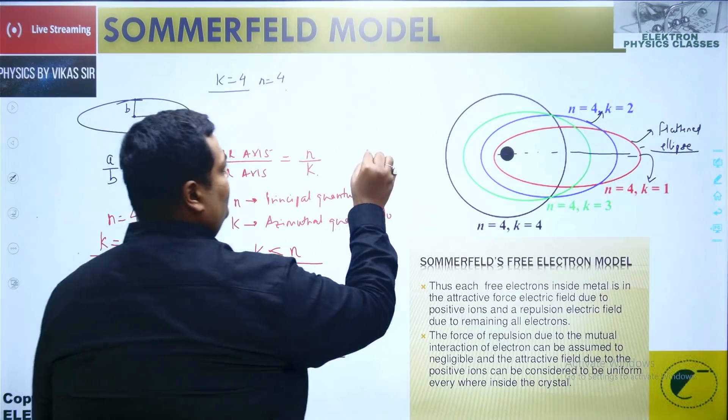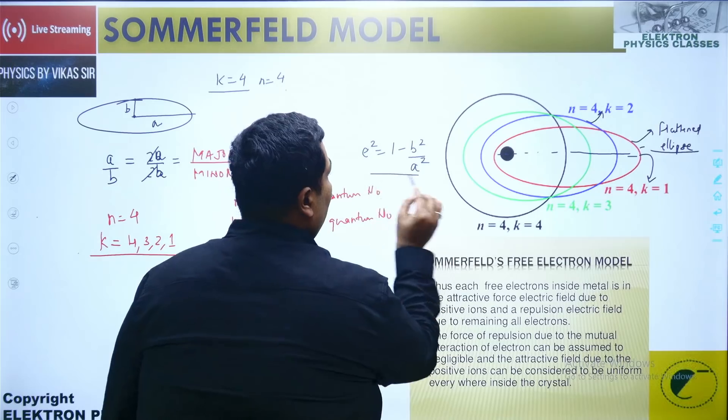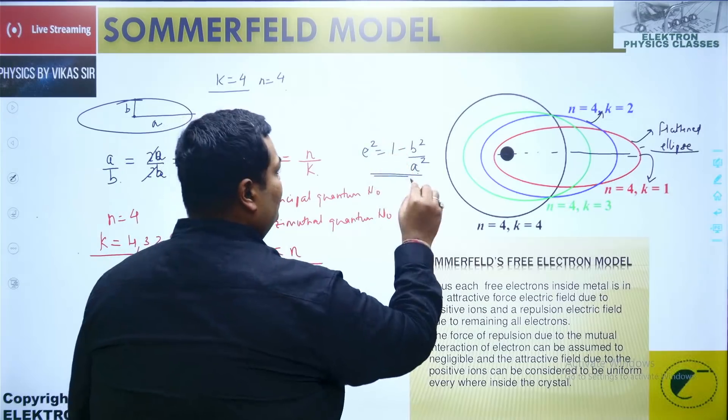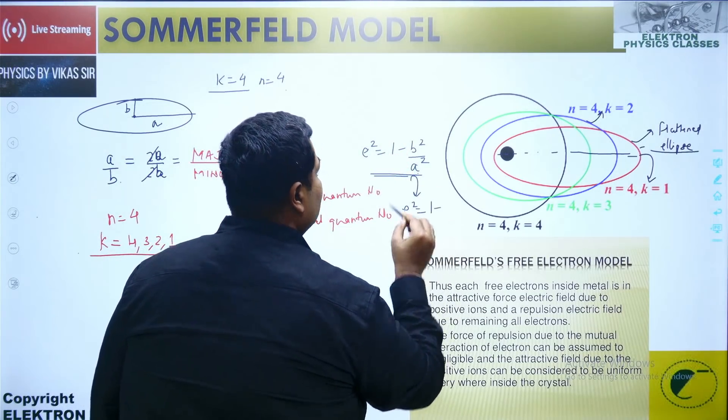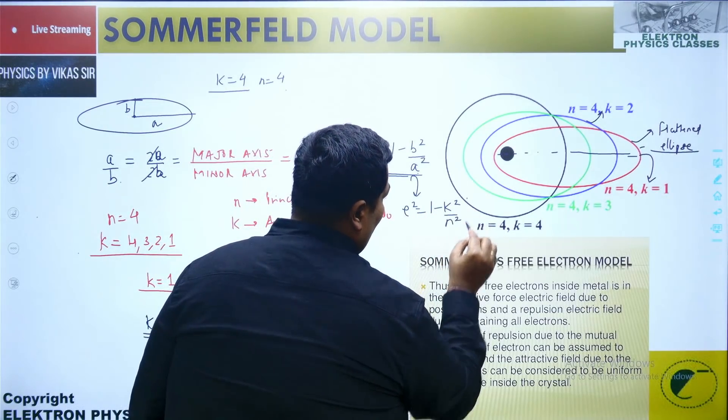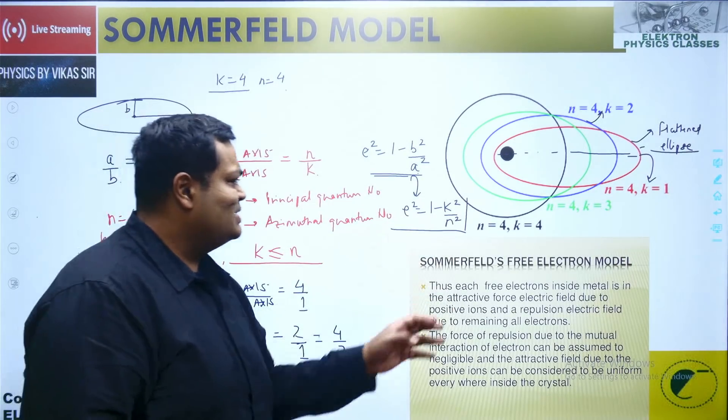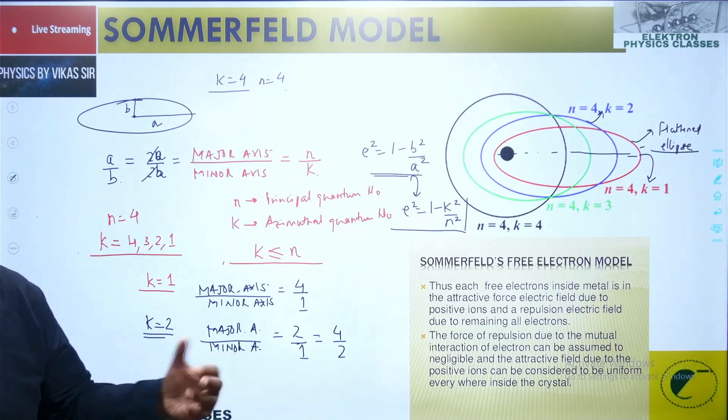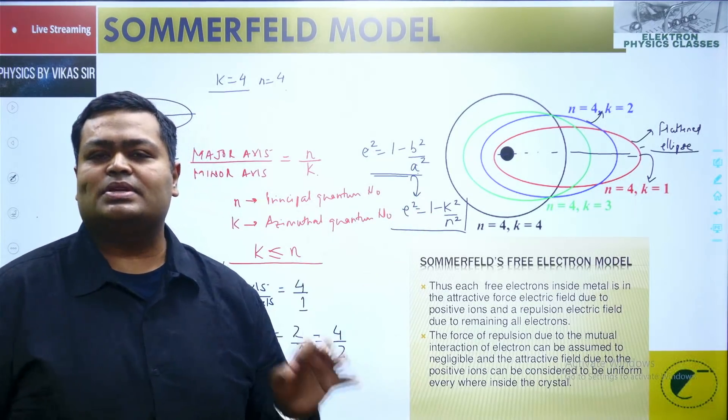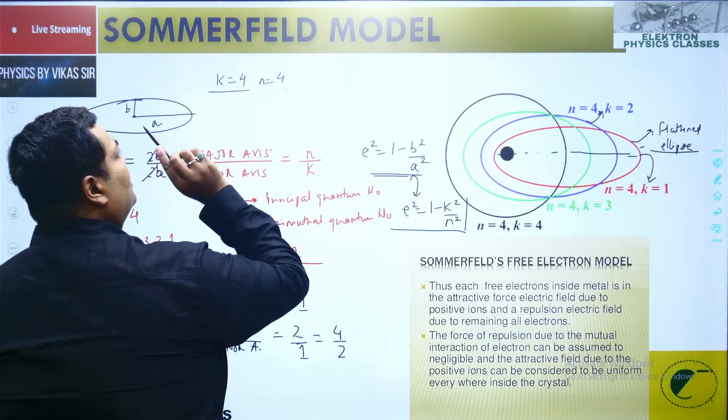And also the eccentricity, what is that? That is the square root of 1 minus b squared upon a squared. So that is b upon a, that is k upon n. You can also write this as equal to the square root of 1 minus k squared upon n squared. So as the value for k grows, the eccentricity decreases. When the value for k becomes equal to n, eccentricity becomes 0 and it becomes a circular orbit.